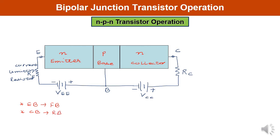You can observe the width of the depletion region for the base-emitter junction — it will be very small because this junction is forward biased. On the N side, donor atoms, and on the P side, acceptor atoms will be accumulated. Because this junction is forward biased, the depletion region width is small.